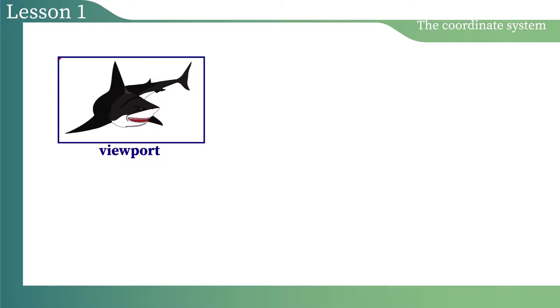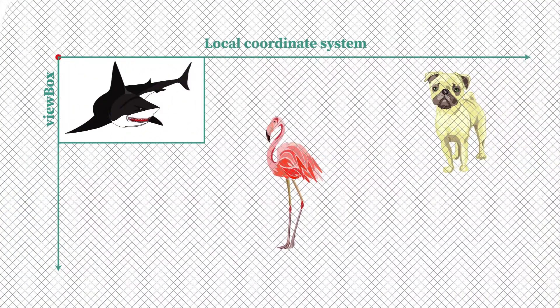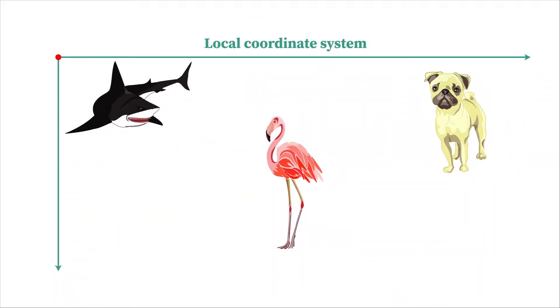As I said, the SVG element creates two coordinate systems. The second coordinate system is the initial local coordinate system, which by default starts at the same point as the viewport coordinate system. But unlike the viewport coordinate system, this coordinate system is infinite. The local coordinate system is the place where the graphics lives.